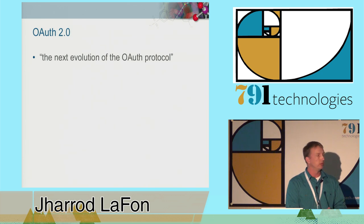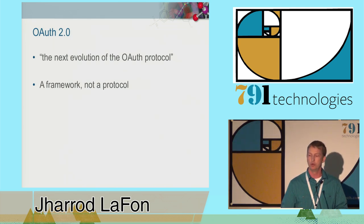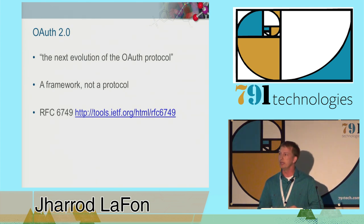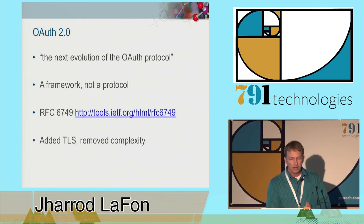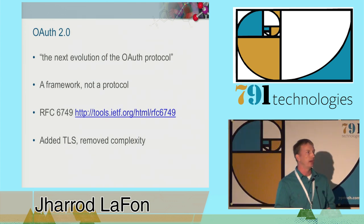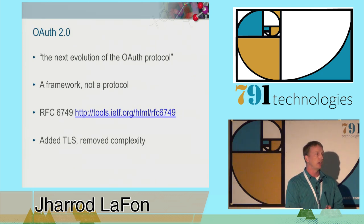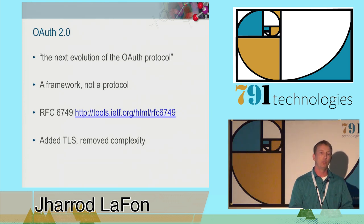OAuth 2 is called the next evolution of the OAuth protocol, although if you want to be technically correct—the best kind of correct—it's a framework, not a protocol. It's a whole lot more general than OAuth 1. It's released as RFC 6749, and I recommend that all of you read it. It's an easy read—they left all of the hard bits up to you. The key difference from OAuth 1 is that they've added the requirement for transport layer security. In exchange for that requirement, they were able to remove some complexity from the protocol, making it a little easier to use, whereas OAuth 1 was designed to be secure independently of the transport.